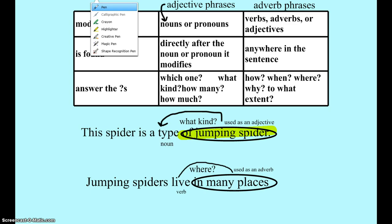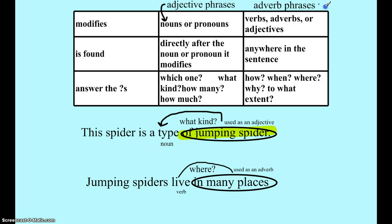We can do the same thing when we look at adverbs. We first have to understand what adverbs do — they describe verbs, other adverbs, and adjectives. The problem with these is they really can be anywhere in the sentence, so there's not an easy, quick way to recognize them.